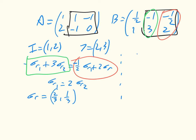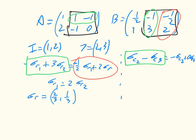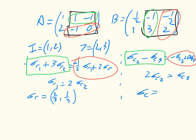For the column player with j={2,3}, the equation is σ_c2 − σ_c3 = −σ_c2 + 0·σ_c3, which gives 2σ_c2 = σ_c3. Combined with σ_c2 + σ_c3 = 1, we get σ_c = (0, 1/3, 2/3). The row player has nowhere else to go, so σ_r is likely a best response, but we need to verify σ_c.